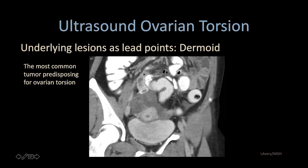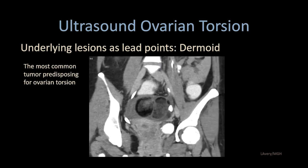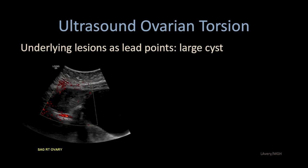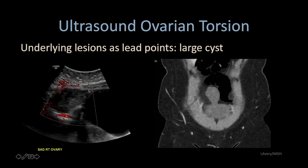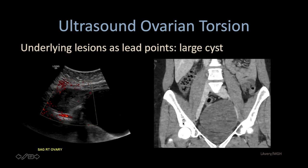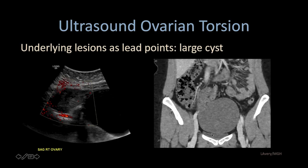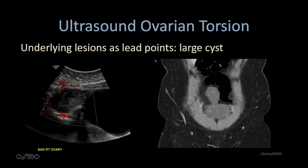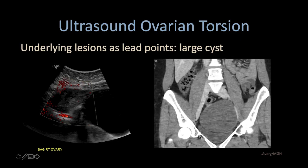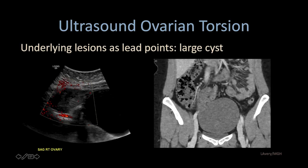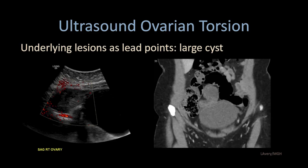Ovarian dermoids are the most common tumor that predisposes to ovarian torsion. Here we have a very hard to visualize ovary without any blood flow, but a very large cystic lesion. This patient went on to CT scan, and on coronal images you can see this huge cyst — that's the bladder down here — and a large torsion ovary in the midline. This was torsion from a large cystic lesion as the lead point.